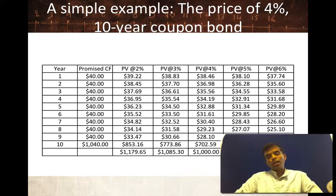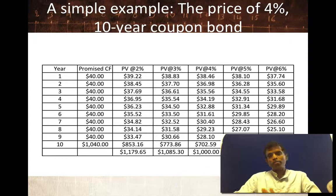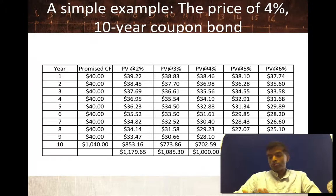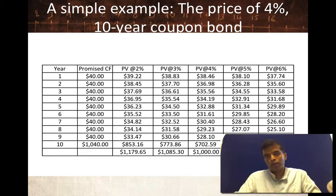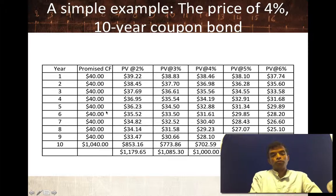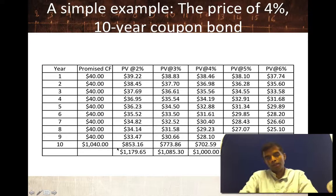Here's a very simple example. Let's assume you have a 4% coupon 10-year bond. Let's keep things simple and assume the coupons are paid once every year — normal bonds might pay two coupons a year, but that doesn't change the mechanics. So we're going to keep it as $40 every year for the next 10 years. At the end of the 10th year, you get $1,000 plus the $40. In the second column of the table, you'll see the promised cash flows of $40 every year for the first 9 years, and in the 10th year you get the $40 plus the face value back.